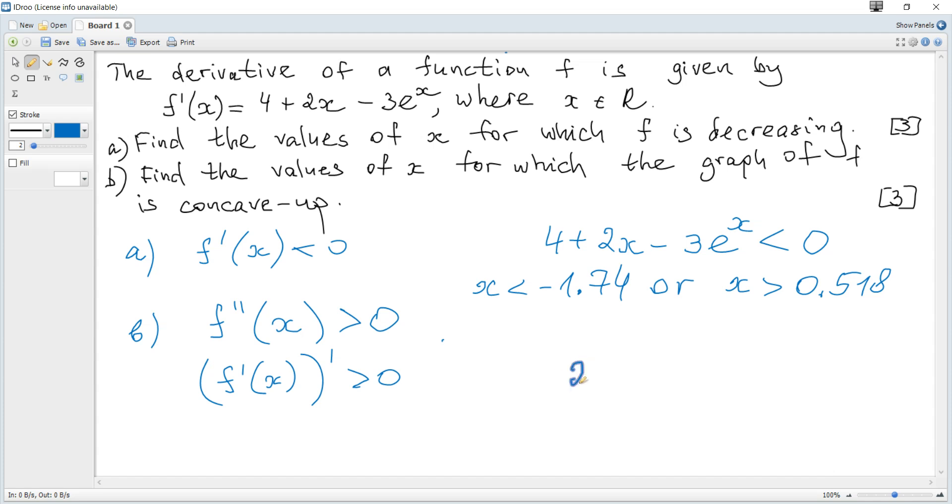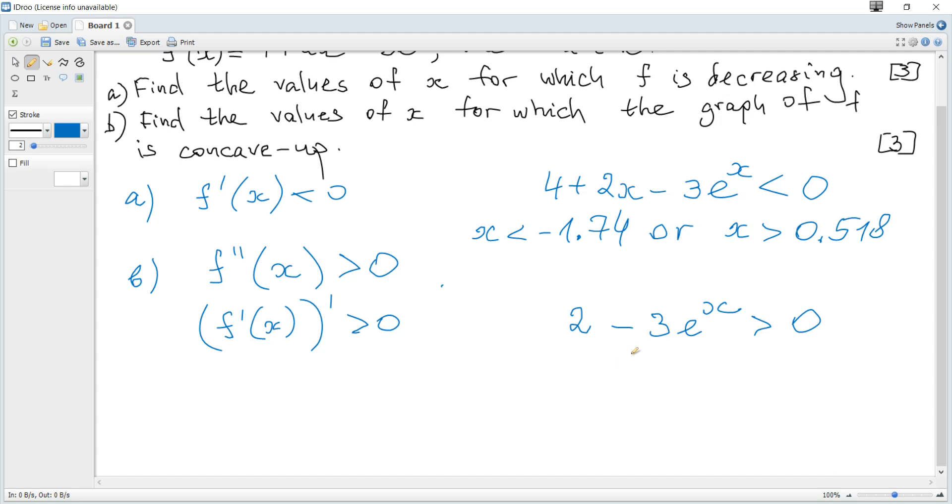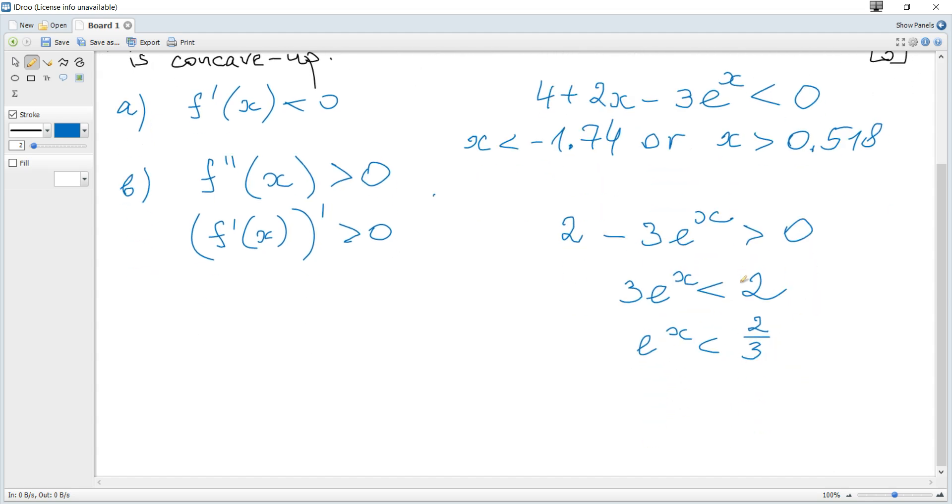So it's just 2 - 3e^x, and it must be greater than zero. We should solve this inequality. Actually it can be solved easily without a calculator, because moving terms to the right, it becomes 3e^x < 2, so e^x < 2/3. Then using ln...